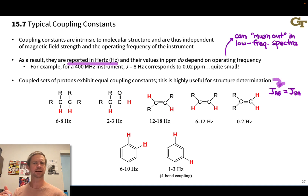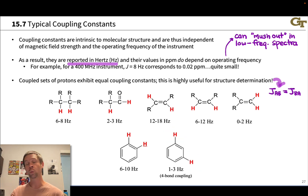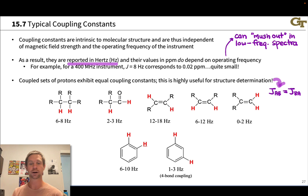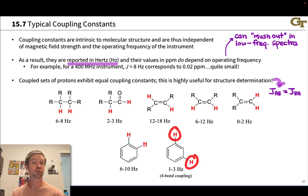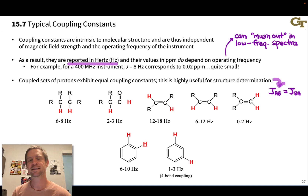One thing worth noting: benzenes can exhibit long-range coupling between hydrogens farther away than vicinal — a 1-3 relationship — and these coupling constants can be between 1 and 3 hertz. This is called four-bond coupling, or long-range coupling. Because of the pi electrons in the benzene ring, coupling can occur over this relatively long range, though we won't touch on this in detail.